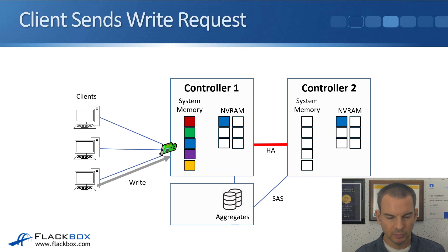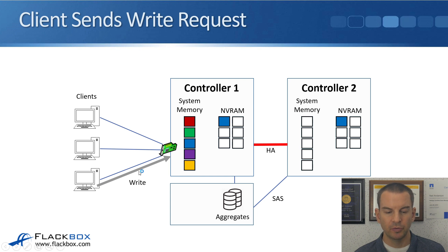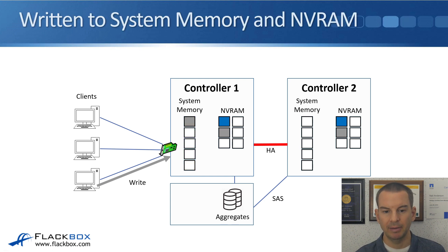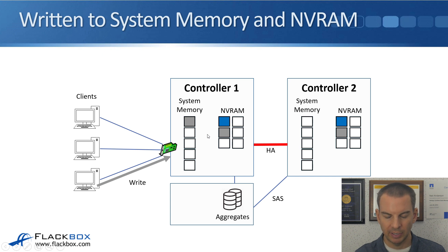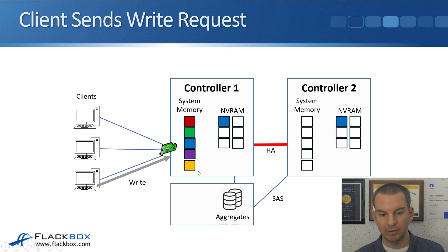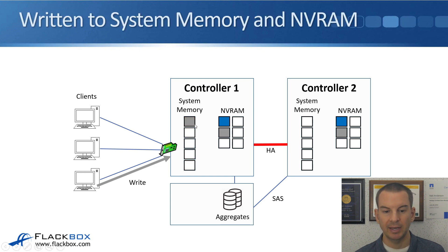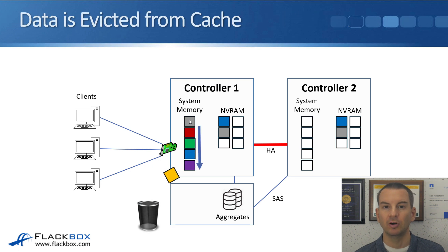In our example, the next thing that happens is a client sends in a write request for gray data. It gets written into system memory and NVRAM on Controller 1, and also into NVRAM on Controller 2. When it comes in, it goes into the top slot in system memory and everything else gets bumped down a slot. The yellow data was in the bottom slot just before this write came in, so now the gray data goes to the top, everything bumps down, and because system memory is full, the yellow data gets bumped out and is no longer in the cache.